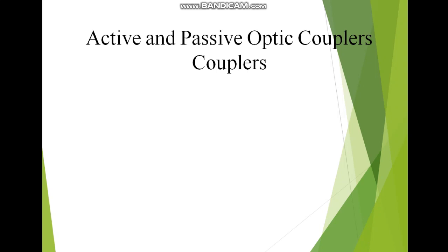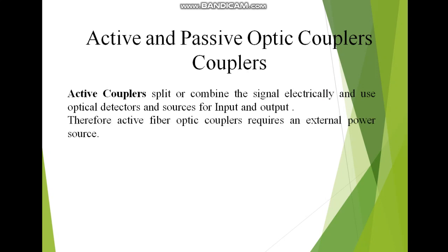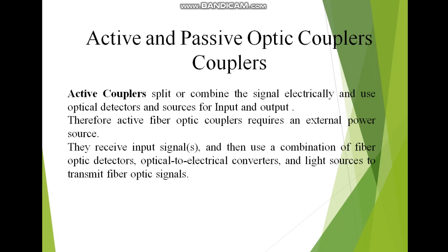Next we will discuss active and passive optic couplers. An active coupler means we need optical to electrical conversion whenever we are transmitting the signal from a coupler. Also, we need an external power supply. So an active coupler requires an external power source and an optical to electrical converter.